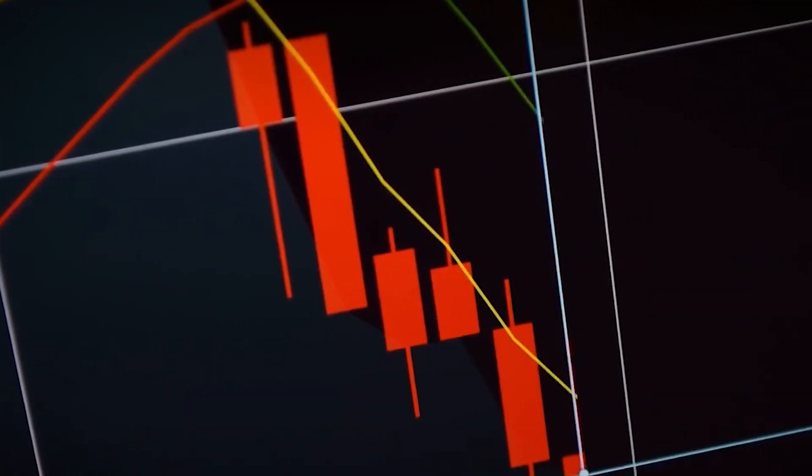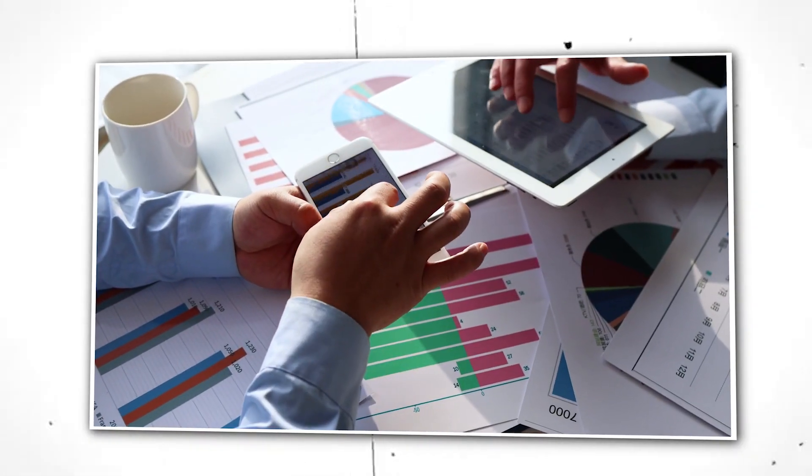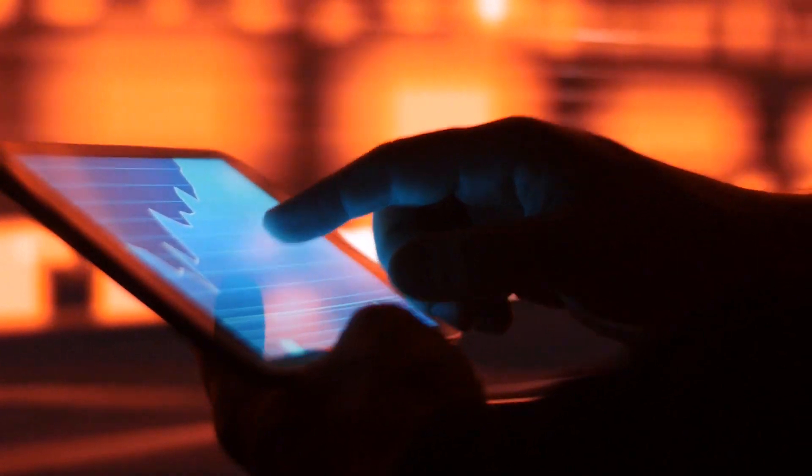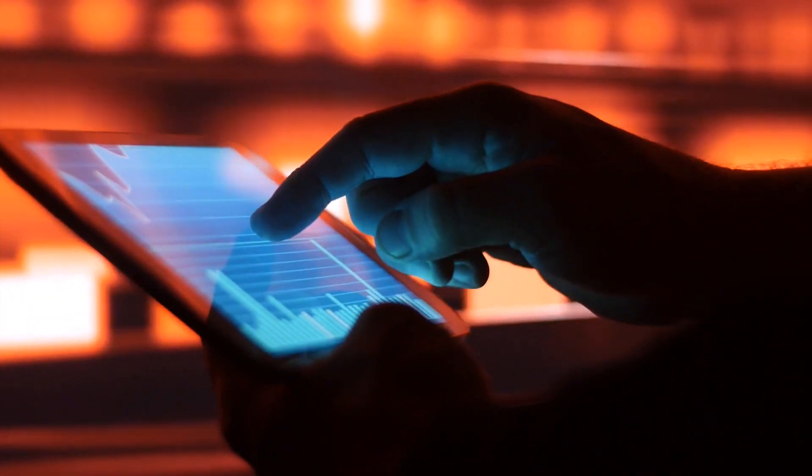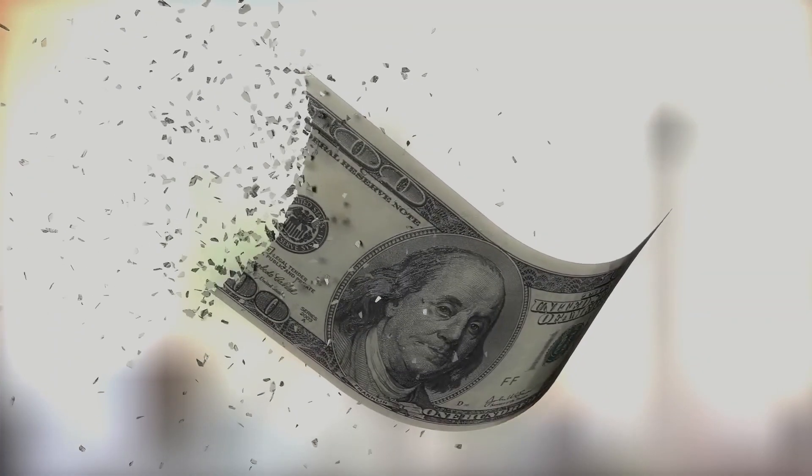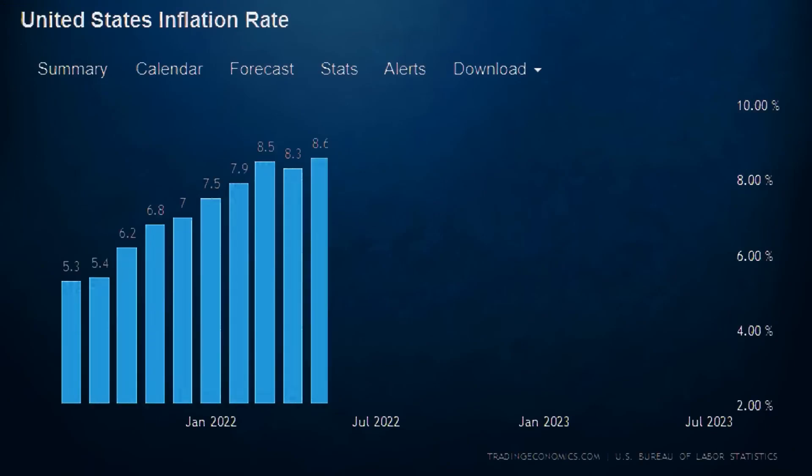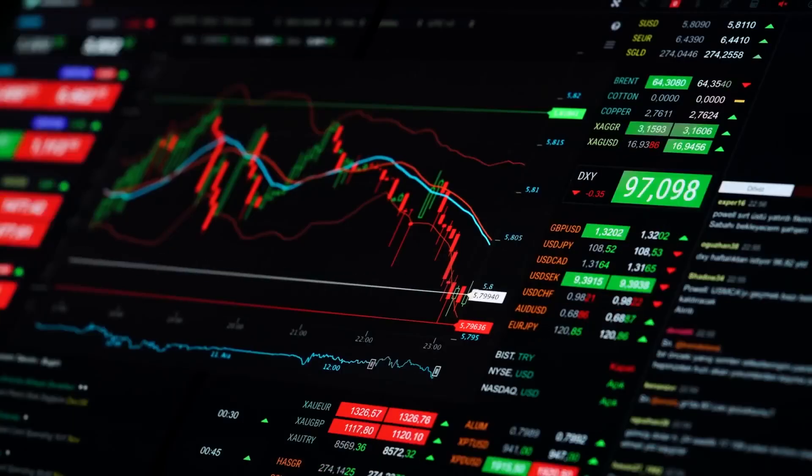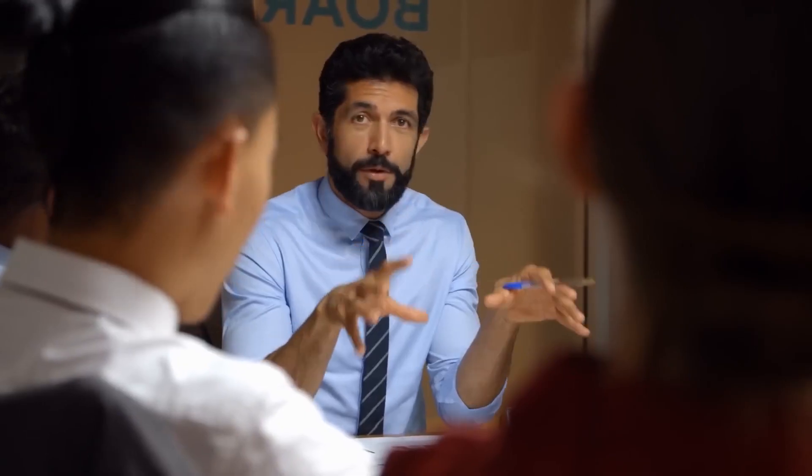Historical volatility and market performance trends show that periods of extreme volatility can present chances for strategic investing. Burry's wager against the market via put options is one example of a strategic investment method that could profit from market volatility. Furthermore, diversifying investments across asset classes and industries can help lessen the impact of market volatility on a portfolio.